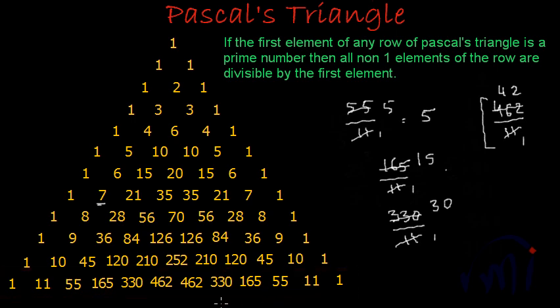So this rule holds good through eleven, and if you have patience you can check this rule with all the other rows as well. This was the property of prime numbers in Pascal's Triangle. Next we have a very, very interesting property — fractals — which is a visual treat to see. Bye-bye till then.